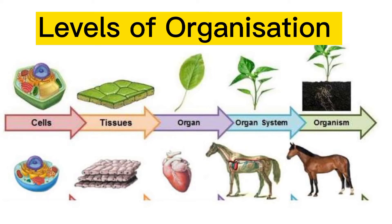Multicellular organisms are made up of many parts that are needed for survival. These parts are divided into levels of organization. There are five levels of organization: cells, tissues, organ, organ system, and organism.